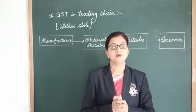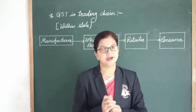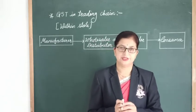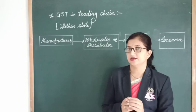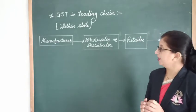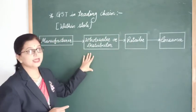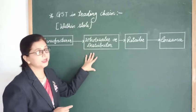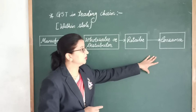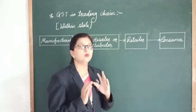We are going to learn a very important topic of this chapter — GST in the trading chain. In a trading chain, generally 4 people are involved: manufacturer, wholesaler or distributor, retailer, and consumer. We are the consumers, and if we want to purchase any goods, we cannot go directly to the factory.